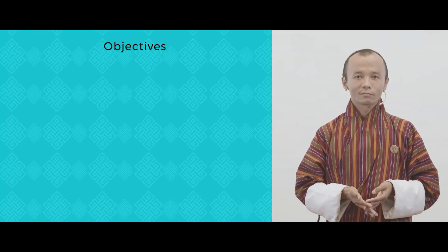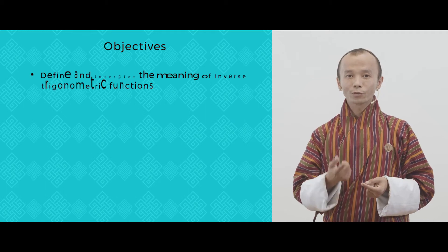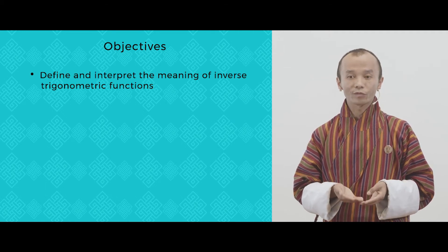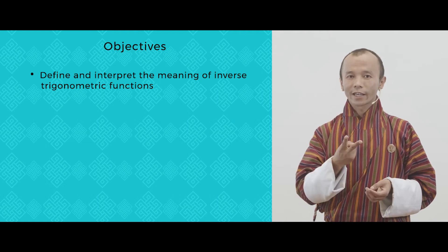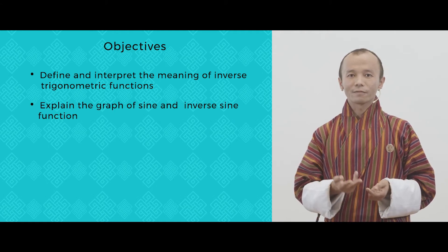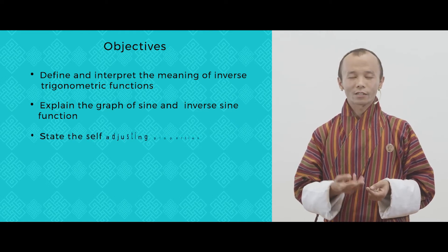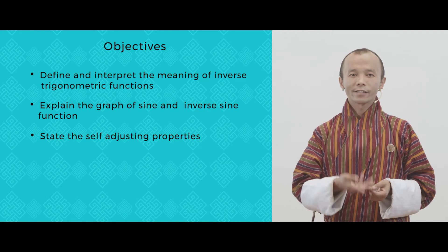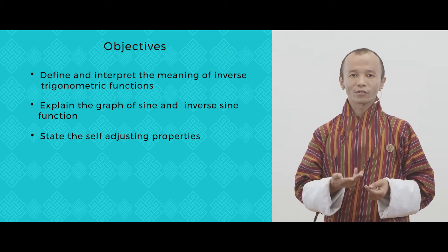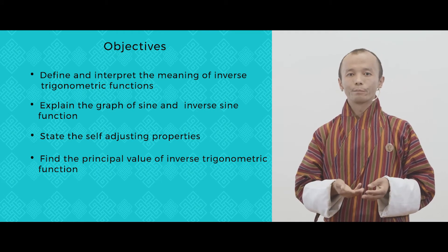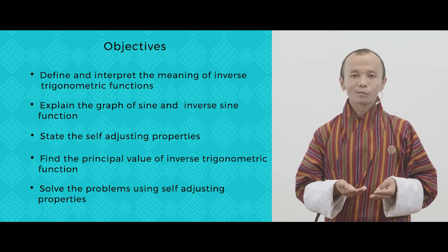I will move on with the objectives of the lesson. First, we should be able to define and interpret the meaning of inverse trigonometric functions. Second, explain the graph of sine and inverse sine function. Third, state the self-adjusting properties. And finally, we should be able to find the principal values of inverse trigonometric functions and solve problems based on self-adjusting properties.